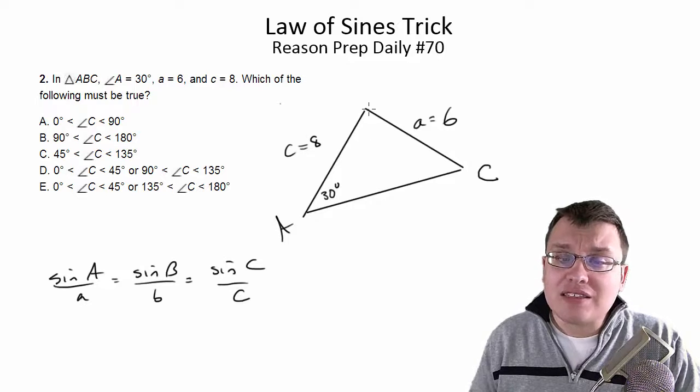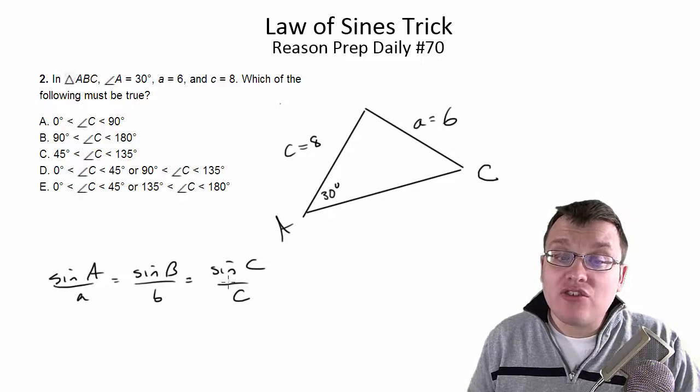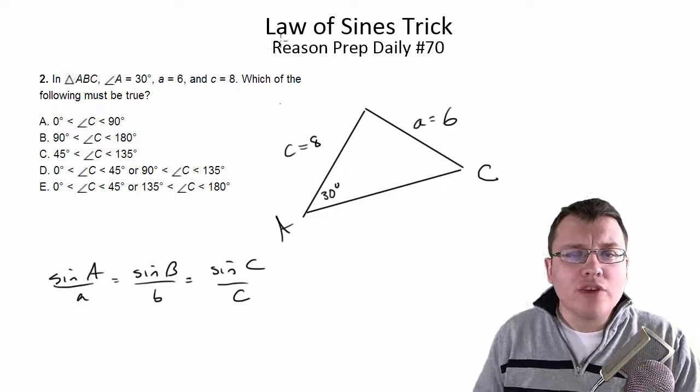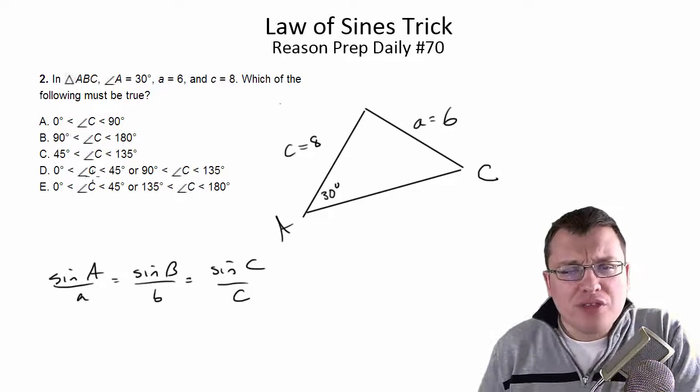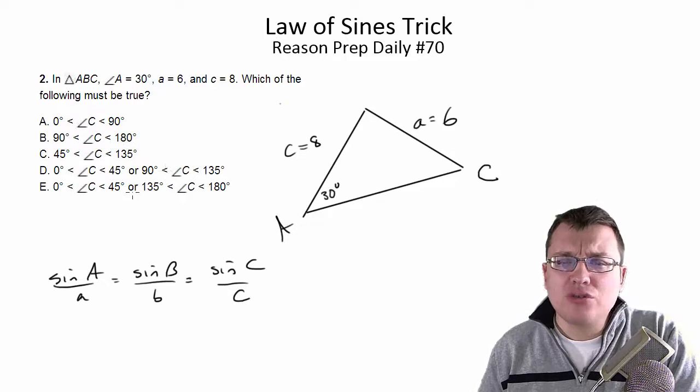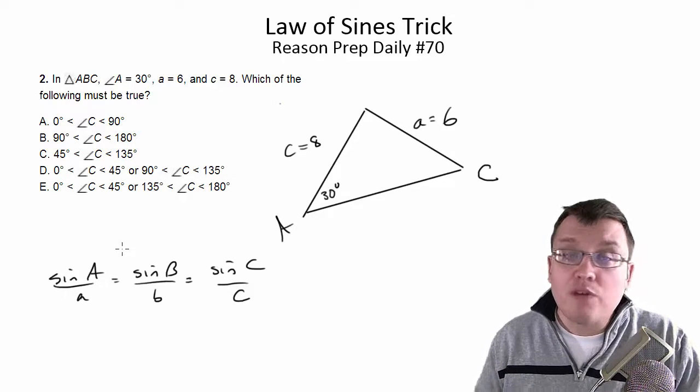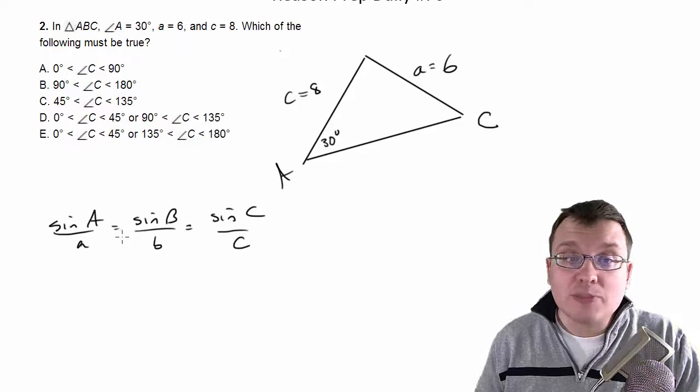We've got angle A, we've got side a, we've got side c, and we want to find the possible measures for angle C. So we're in place. Now you might say though, what's going on with this? Why can we have like two choices? What's going on here? And this is where the little trick comes in. But first, let's solve it how we might expect to solve it.